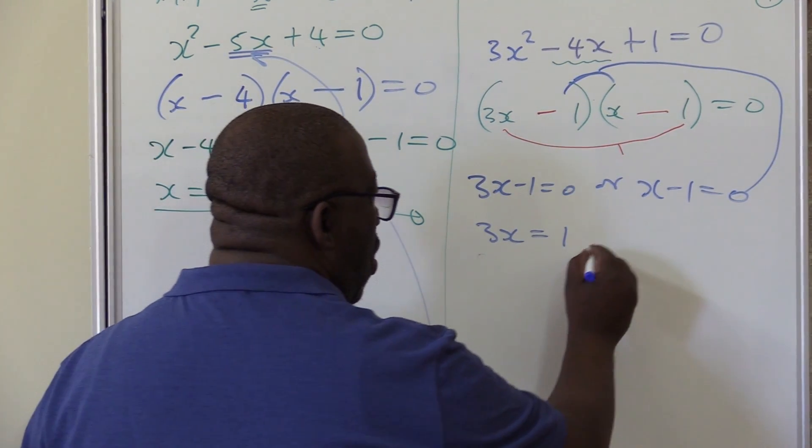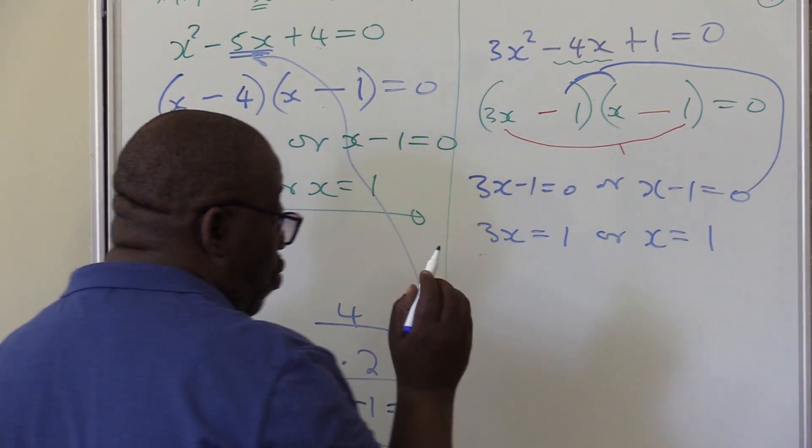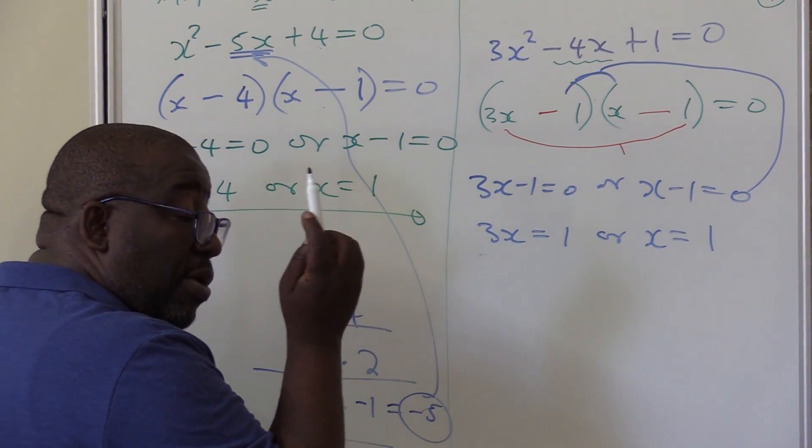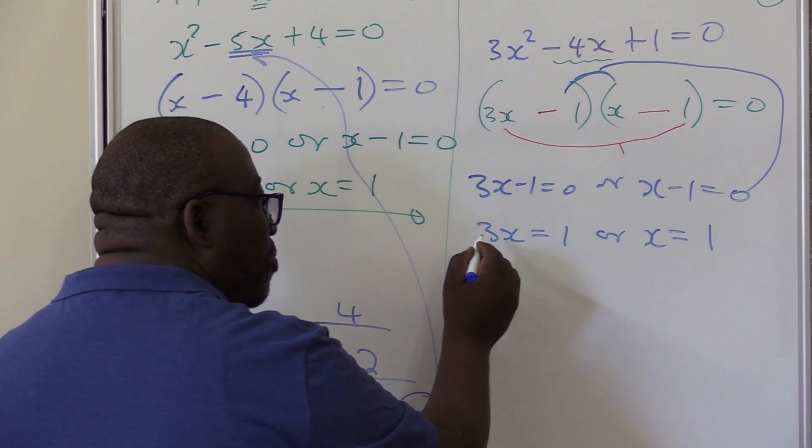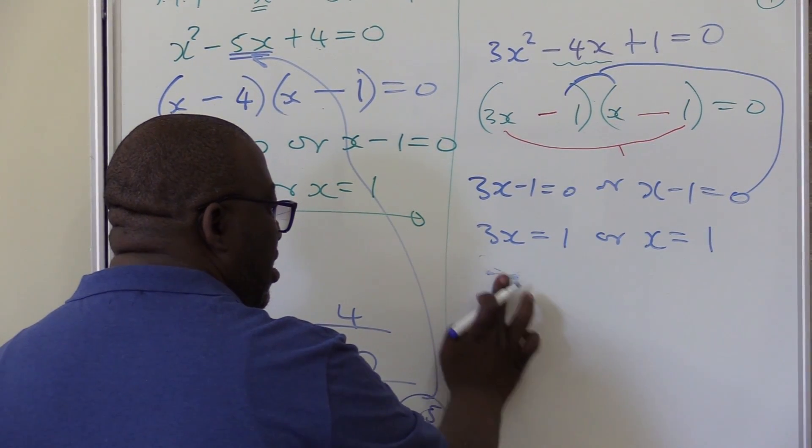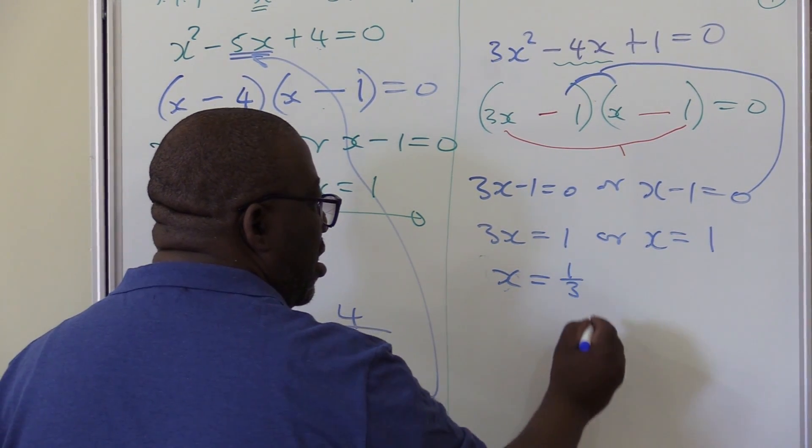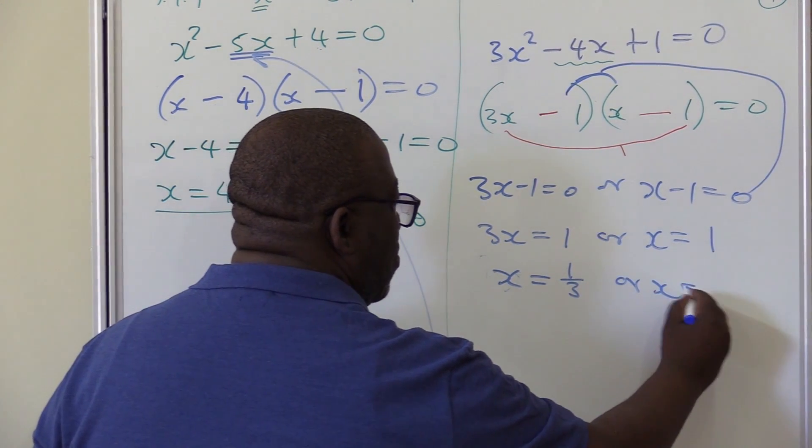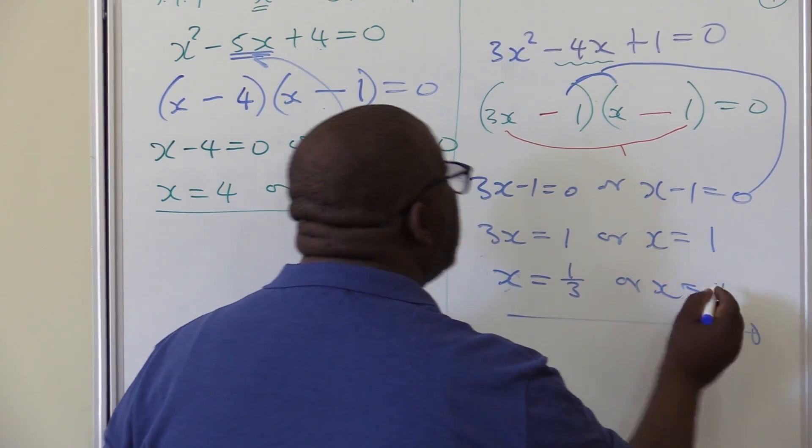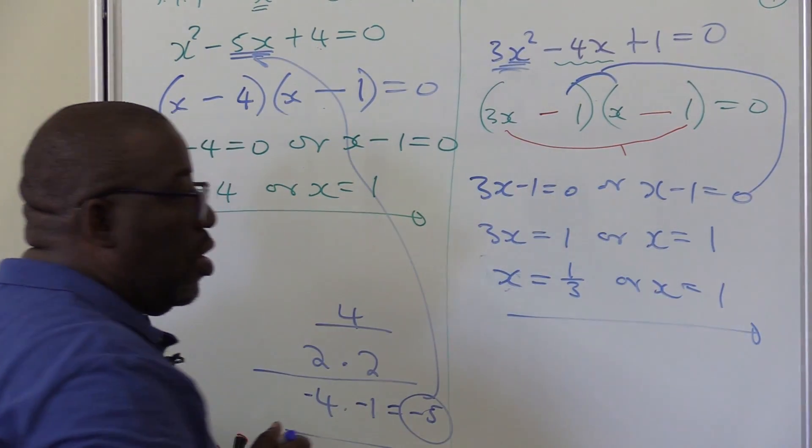Remember, we're not looking for 3x, we're looking for x. You divide by three on both sides. If I divide this by three, I'll be left with x equals one out of three, or x is equals to one. Yes, I've got two solutions because my x is to the power two. Thank you.